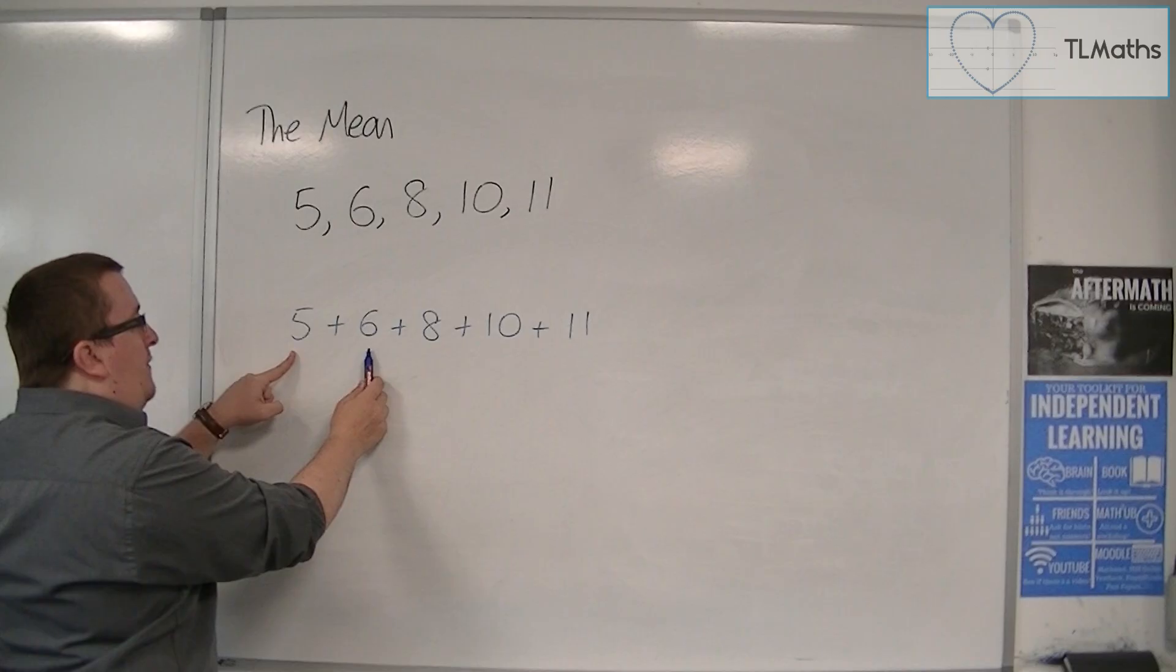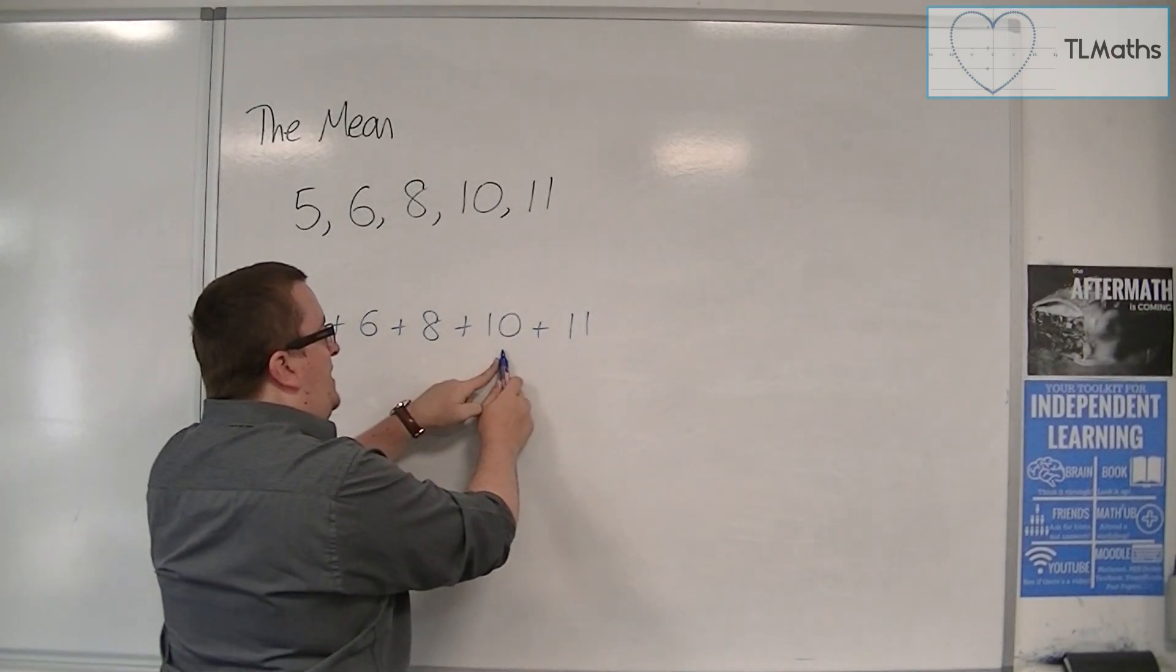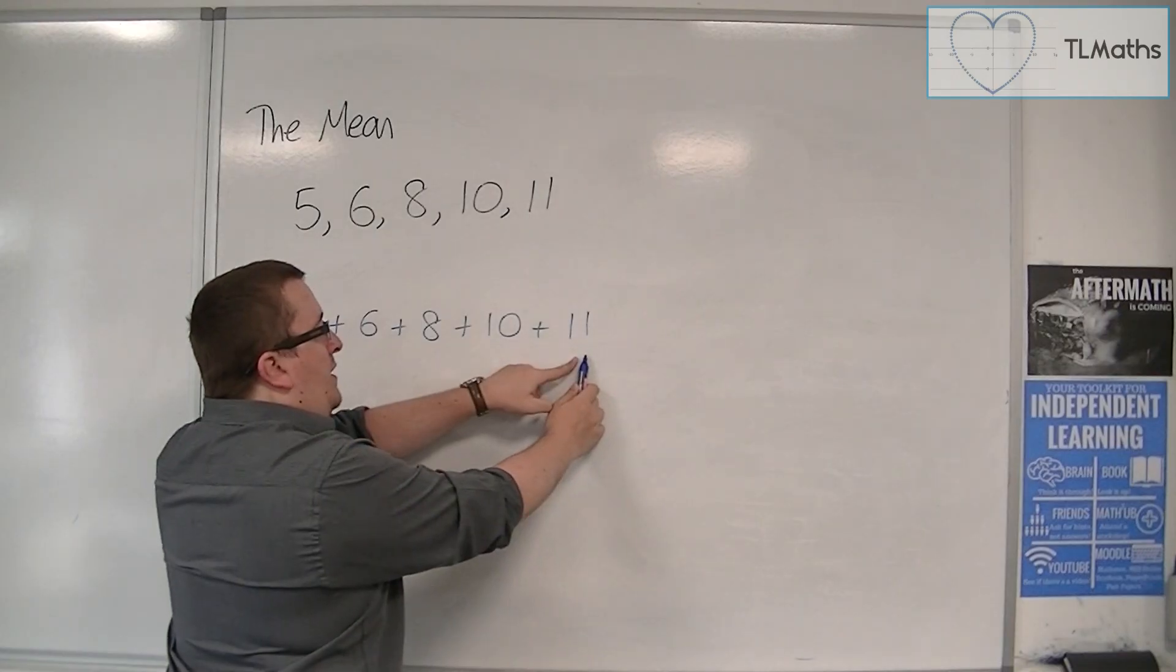So 5 and 6 is 11. Plus 8 is 19. Plus another 10 is 29. Plus 11 is 40.